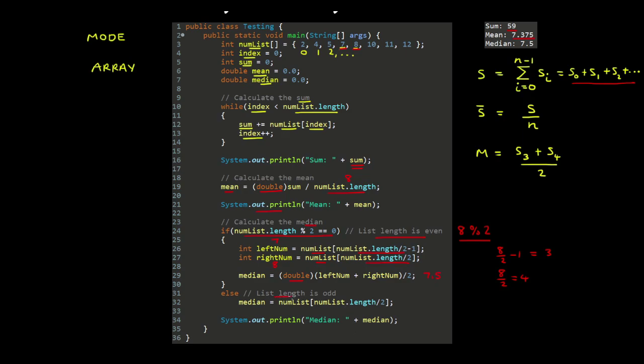So if the length of the list was odd, then basically we just take the number in the middle of the list as the median. But in our case, the length of the list is even, so our median is 7.5, which is output to the screen using this code statement.